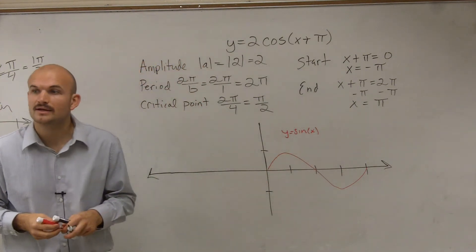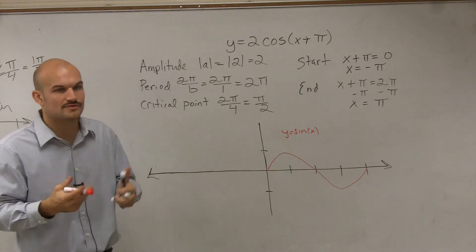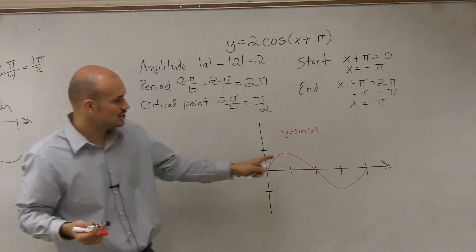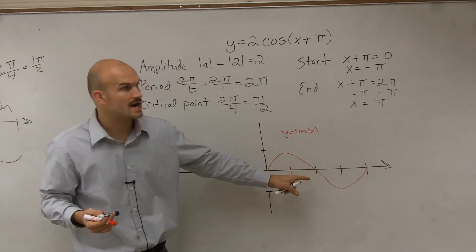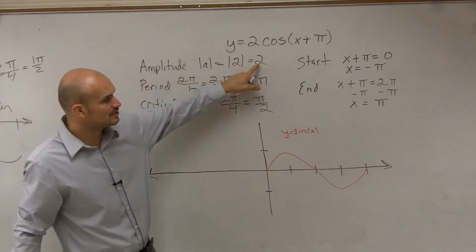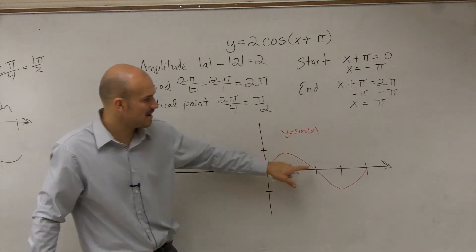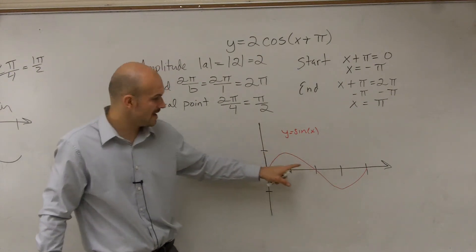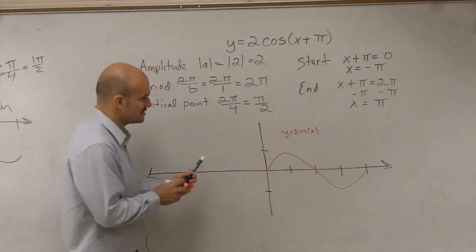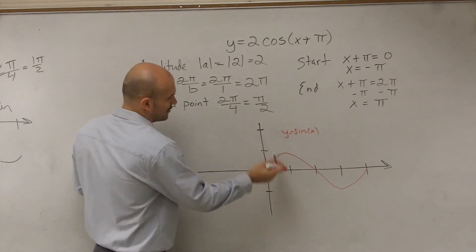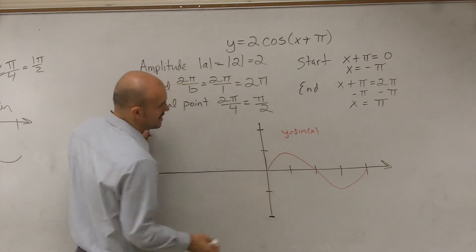That's what the parent graph looks like. Now let's take a look at what my transformations have done to change this graph. First of all, our amplitude is 2. That means the half distance between my max and min is now not 1. Now that half distance is 2. So I'm going to go up to positive 2 and down to negative 2.